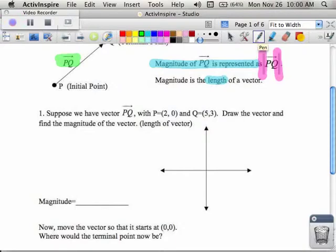The way that you can figure that out is down below in number 1. They talk about vector PQ and they tell us that the P part of this is at 2, 0, so 1, 2, 0, so here's P. And the Q is at 5, 3. So 3, 4, 5, 1, 2, 3. And here's my Q.